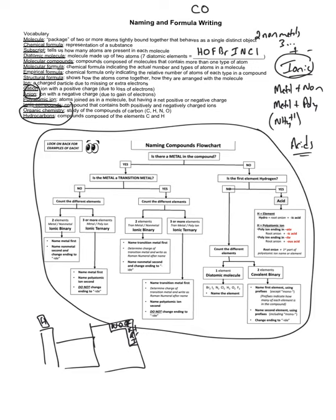To name chemical compounds, the key thing is to look at the formula. How many different elements do you have? If you have only two elements, the key is looking at the first element. If the first element is a metal, then it is going to be an ionic compound. If it does not contain a metal, then it is not an ionic compound.